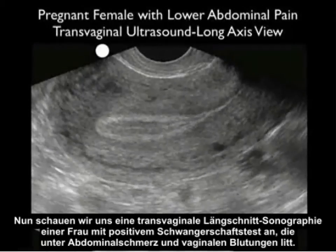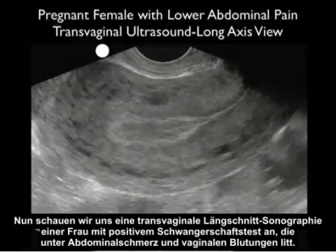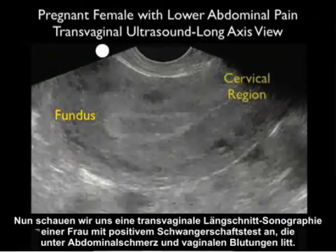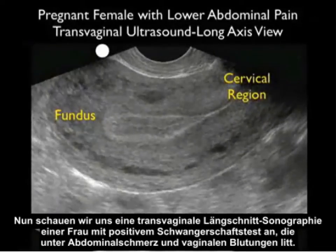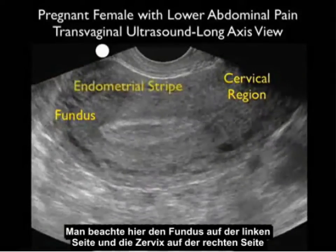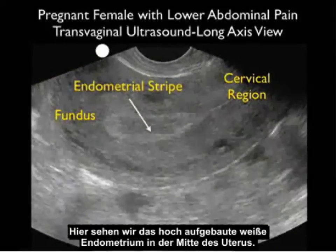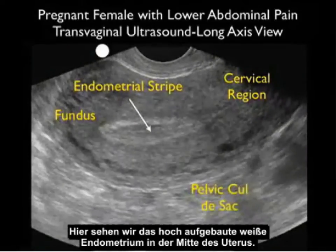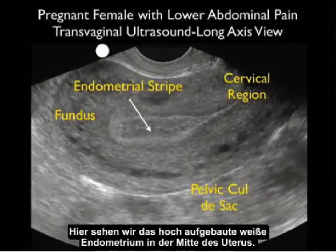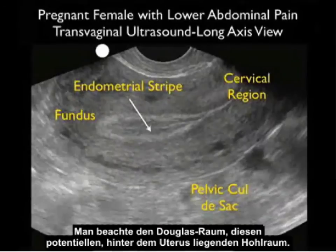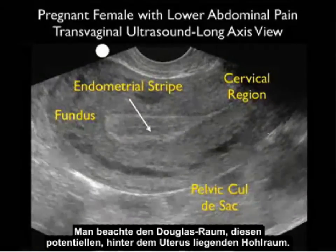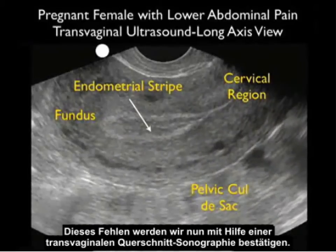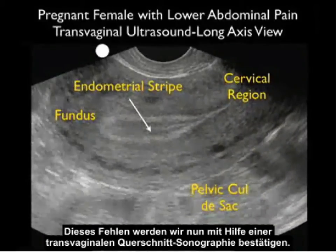Now let's review a transvaginal long axis scan from a woman who presented with a positive pregnancy test, lower abdominal pain, and vaginal bleeding. Notice the fundus shown to the left and the cervix to the right. We see a thickened white endometrial stripe in the midline of the uterus, the pelvic cul-de-sac — that potential space posterior to the uterus — and notice the absence of an intrauterine pregnancy.